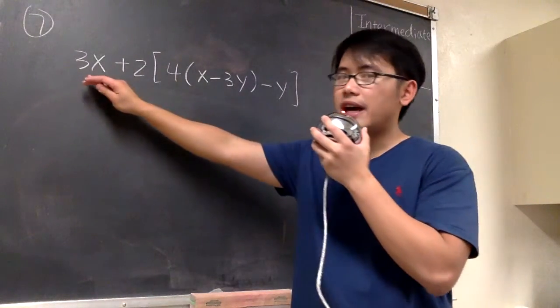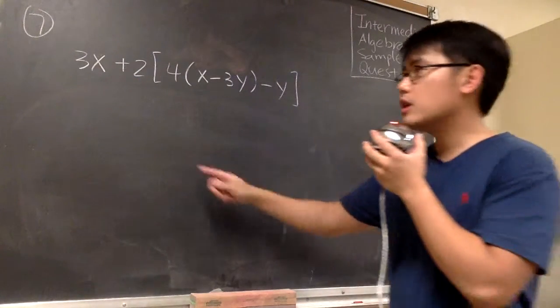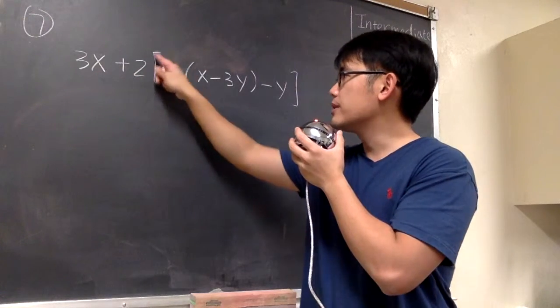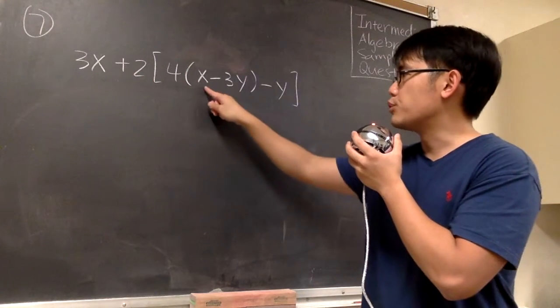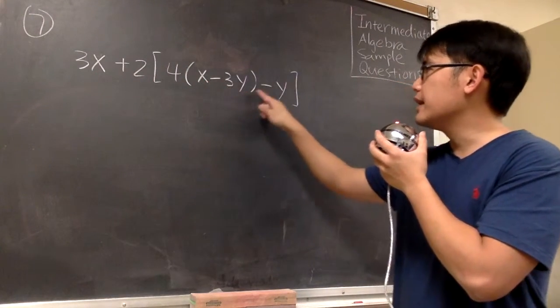For number 7, we are going to simplify and combine terms of this expression. We have 3x plus 2 times the bracket, 4 times the parentheses, x minus 3y, and then minus y.